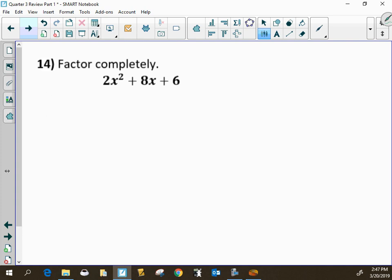Now at first glance, it looks like this problem, a is not 1. But what you will notice is that there is a greatest common factor of 2. And now I'm factoring a trinomial where a is 1. And so this will be 2 times x plus 3 times x plus 1.